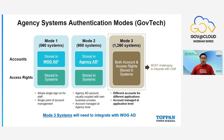Mode 3 systems are the most challenging to integrate with CAM as they do not leverage WOG AD user accounts. You need to start looking into WOG AD integration ahead of the CAM implementation. If you are on Mode 3 and haven't integrated with WOG AD, you should start now. It is crucial to identify which mode your system is running on. Please take the poll appearing on your screen to help us understand your current status.